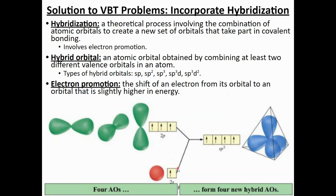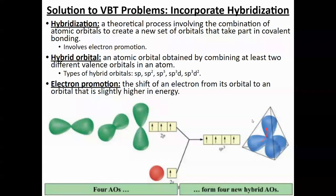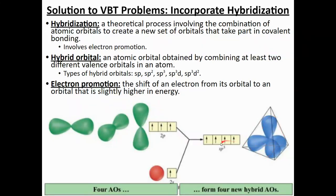When you combine different orbitals, they're named after what they're made up of. This one is made up of an S and three P orbitals, so it's SP3 — four SP3 orbitals in total. Inside there's a little sphere. It looks partly like P and a little like S, but mostly like P because it's three parts P and one part S.